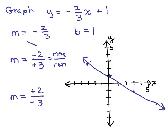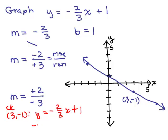Let's do a quick check. The point (3, negative 1) appears to be on the line. Checking in y equals negative 2 thirds x plus 1: putting in negative 1 for y and 3 for x — the 3's cancel and we get negative 1 equals negative 2 plus 1. Yes, that's true. The line is slanting the correct direction, and the checkpoint confirms a point on the line is correct.